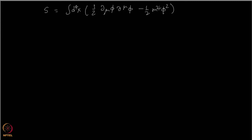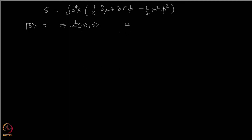We had learned that if we quantize this theory, we find particles or states represented by this. There are states which we can label by some momentum p, which you obtain by acting with a-daggers on the vacuum. We had put some normalization factor here, which is not so important right now. These states represent single particle states.